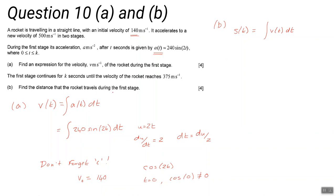It says during the first stage, the distance the rocket travels during this first stage carries on until the velocity is 375. So you need to find what k is, and k is the value of t when the velocity is 375. You need to put v(t) equal to 375 and find the value of t for which that is true, and that becomes k.